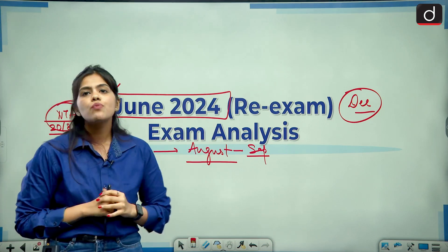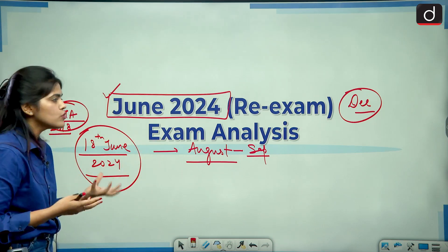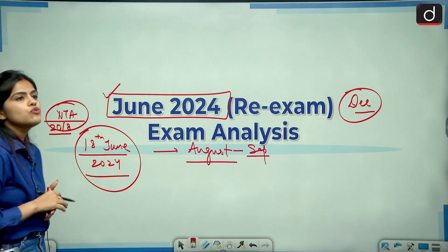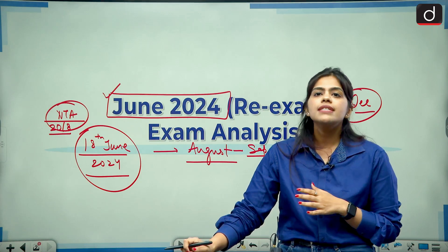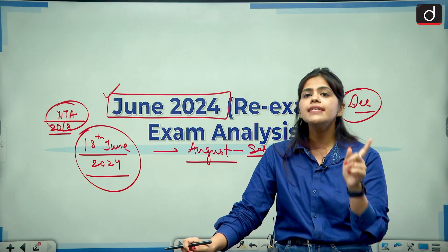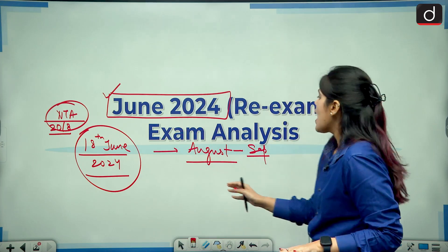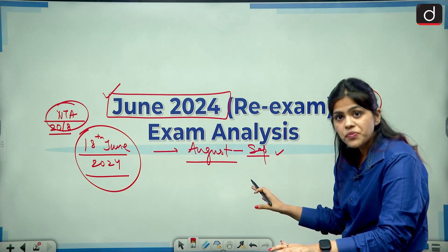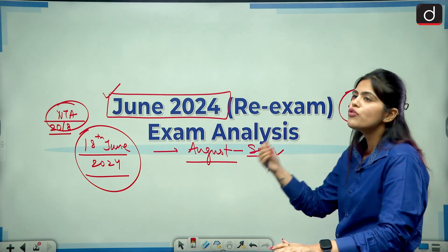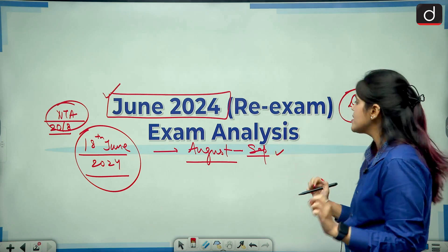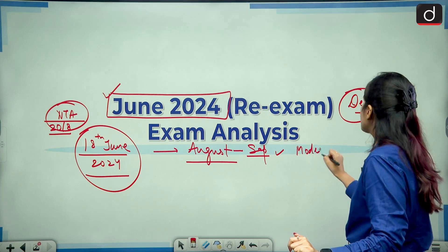Let us talk about the overall examination — what type of questions were asked. When the exam was conducted on 18th June, students told us the paper was easy but lengthy. Data interpretation and comprehensions were a bit difficult. Then when the cycle shifted to August, the paper became lengthy but not that difficult. Overall, when you look at opinions holistically, students said the paper was moderate — not easy, not difficult. The paper was moderate.